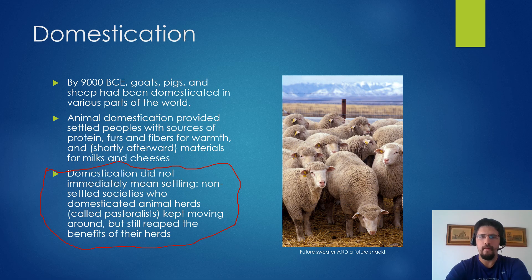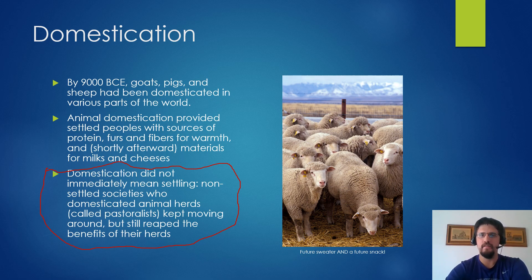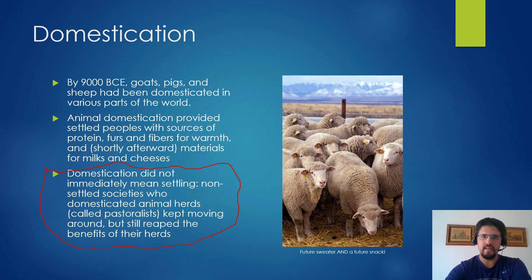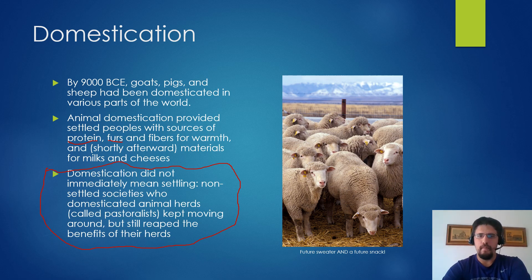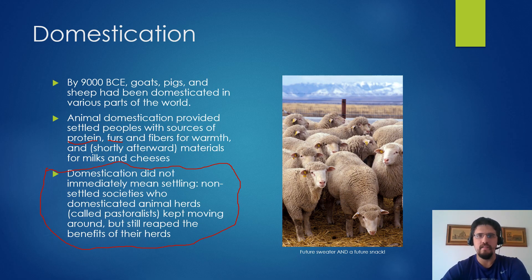Dogs were actually domesticated before humanity developed agriculture and settled down. Cats won't be domesticated for a while. Domestication is a big deal because it gives people more protein, fur to keep warm, and it's also going to be used to create milk and cheese, which does require some development. Now let's take a look at where this domestication happened.